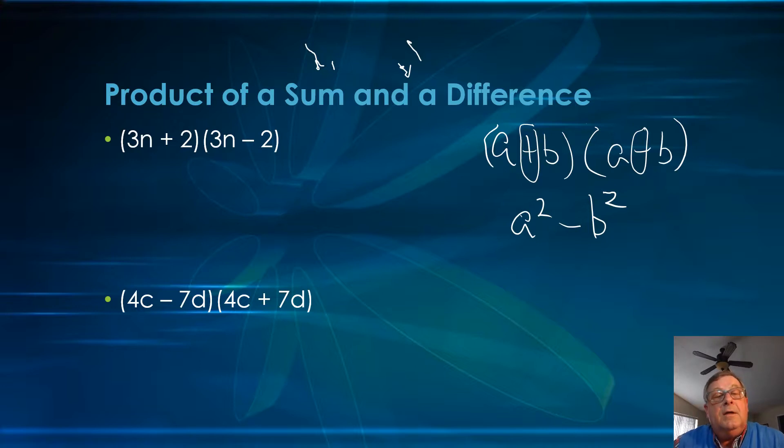Let's look at a couple of these live. We've got 3n plus 2 times 3n minus 2. Once we recognize that we've got that situation, both terms are the same: a plus b times a minus b. In this case, it's 3n and 2.